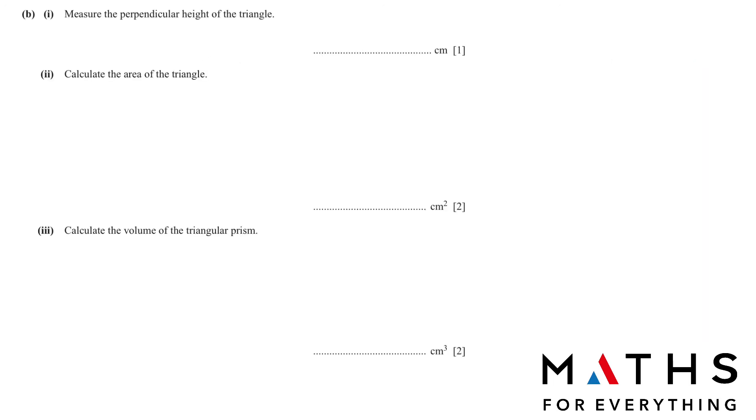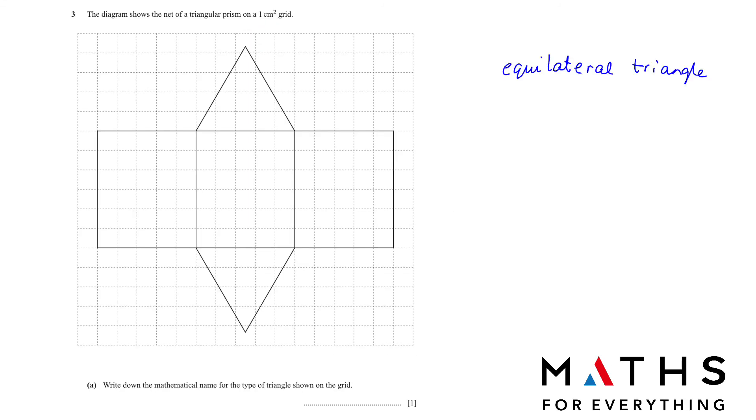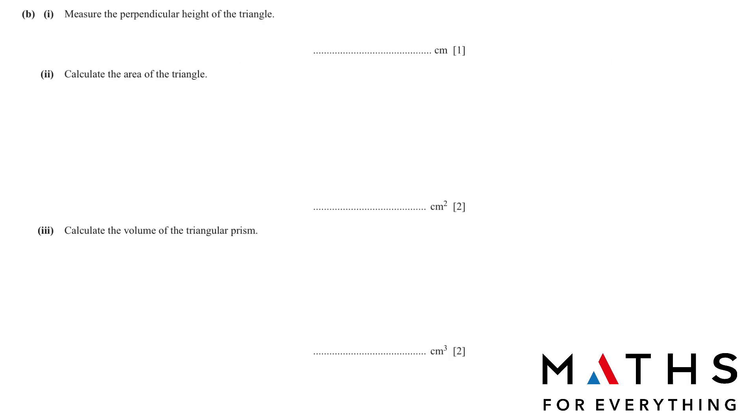3b1. Measure the perpendicular height of the triangle. This is your perpendicular height. So we have 1 square, 1, 2, 3, 4. And it's a little bit above 4. So you can write 4.2 as your answer. But anything between 4.1 to 4.5 is accepted.